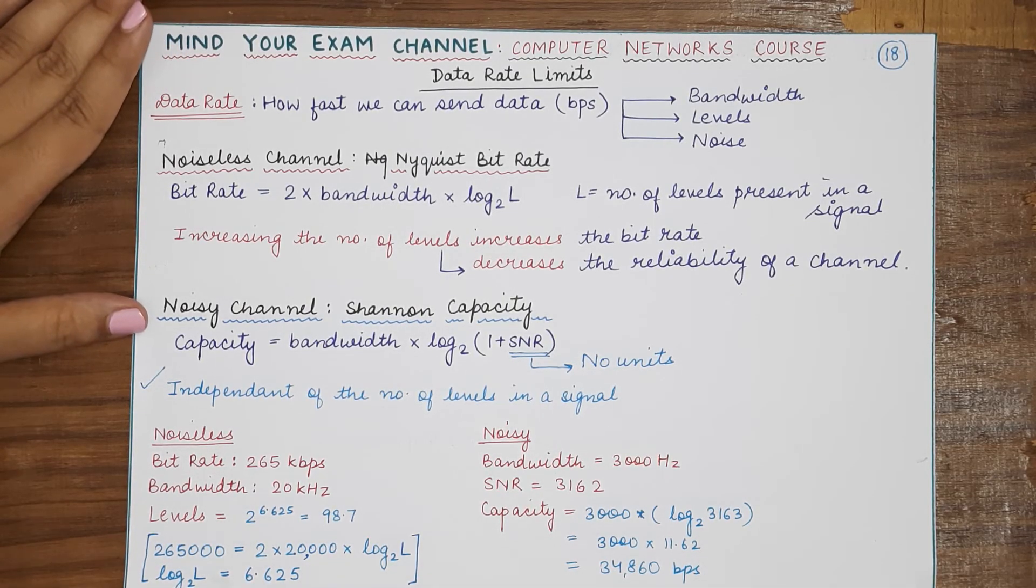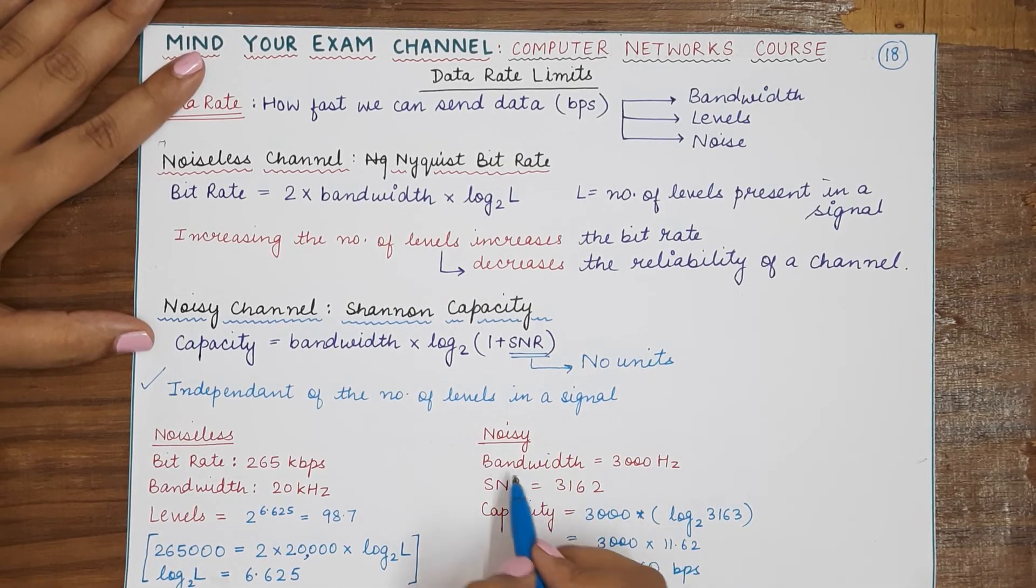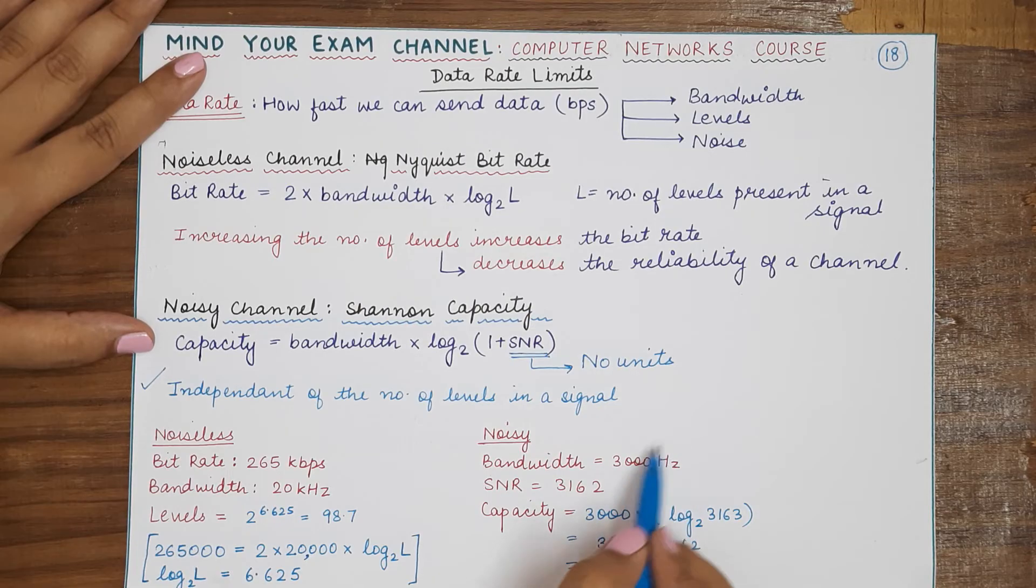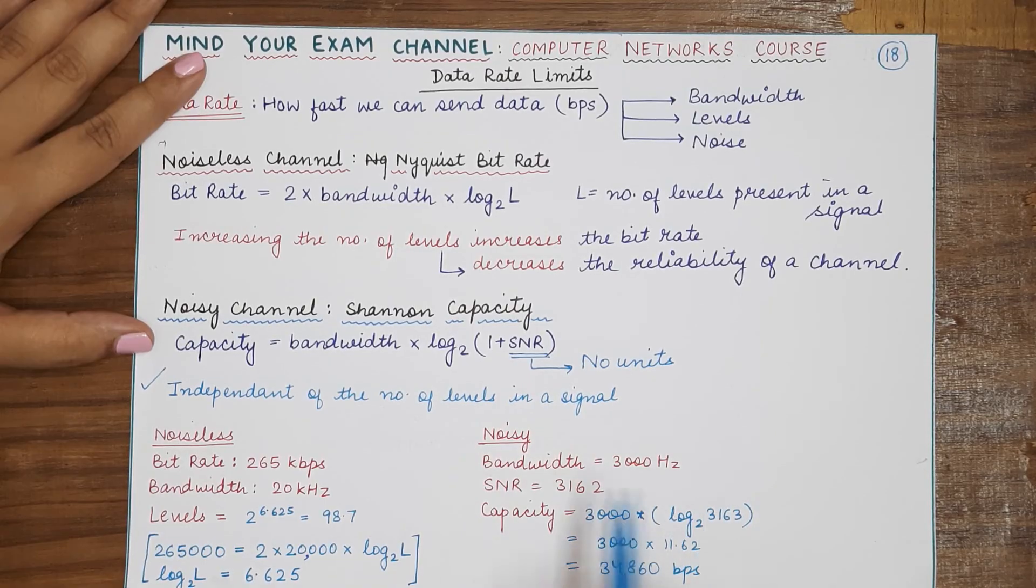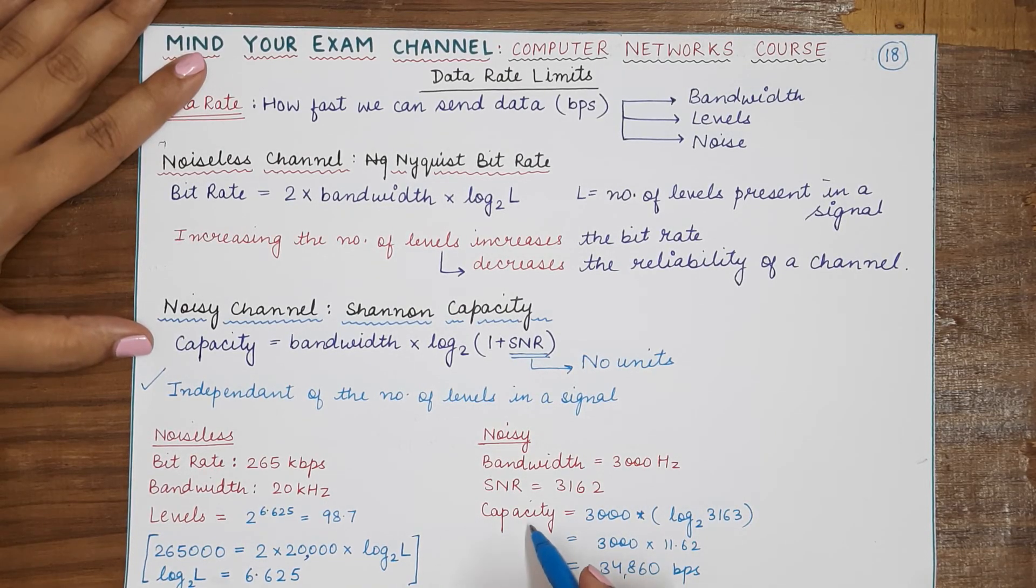Now coming to the question for noisy channel. In this case we are given a bandwidth of 3000 hertz, so no need of conversion here, and we are given an SNR of 3162. Again it is already in the form that we require for this formula, so no need of conversion.